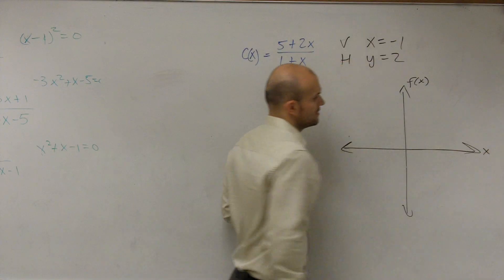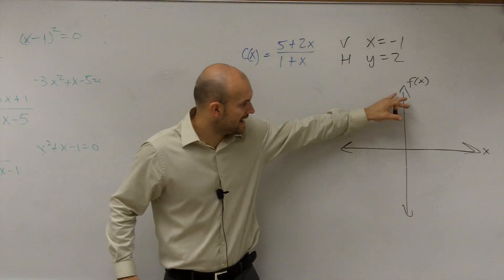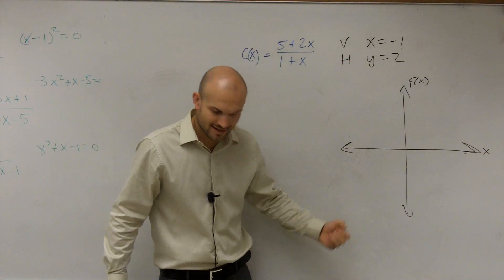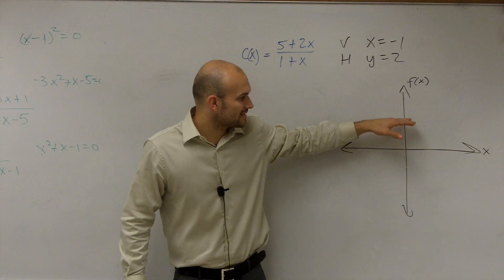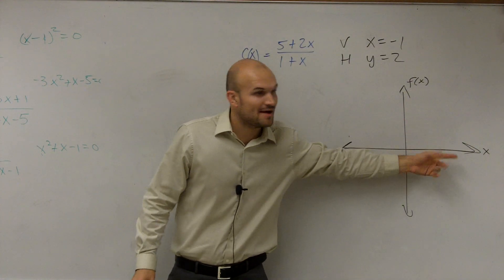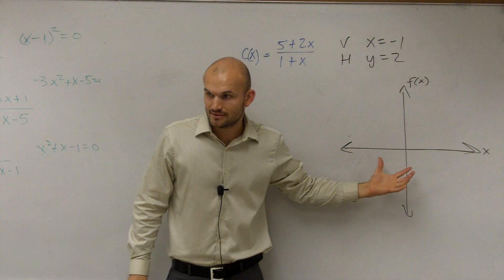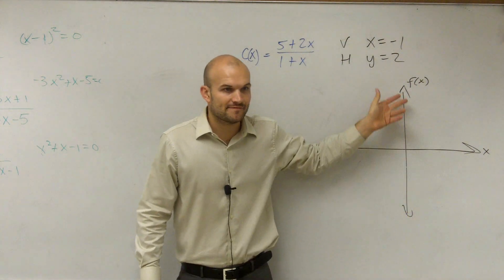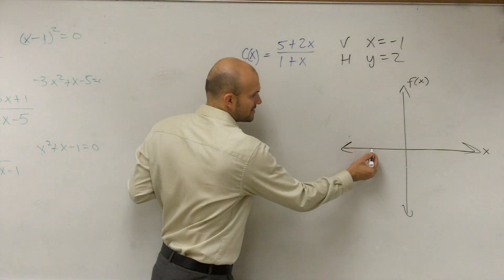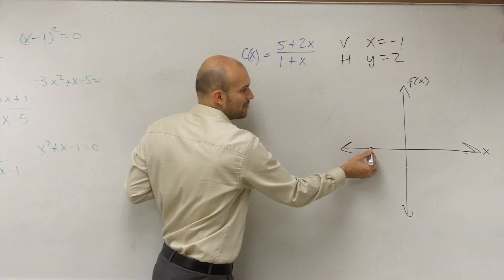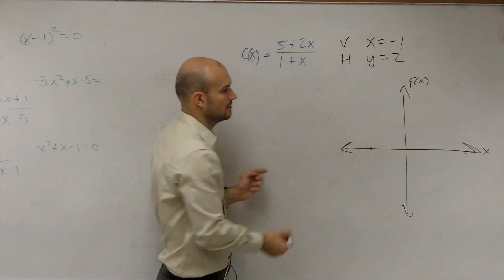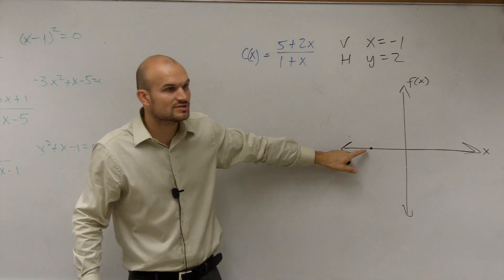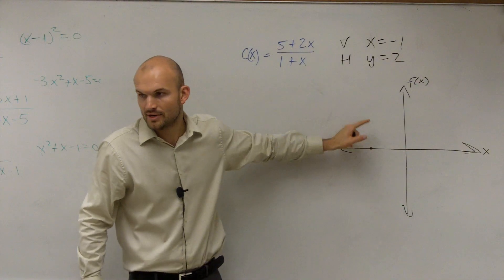When we're dealing with this and I have, when I say what is my x-intercept, that means when the graph crosses the x-axis, right? What is my value of my f of x at this point? What is the value of my f of x at that point? Zero. f of x equals zero at this point, because you're not going up or down at all.